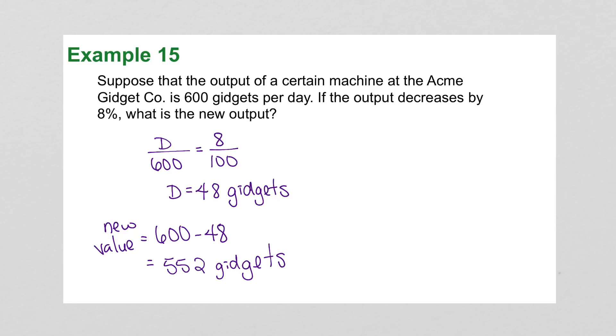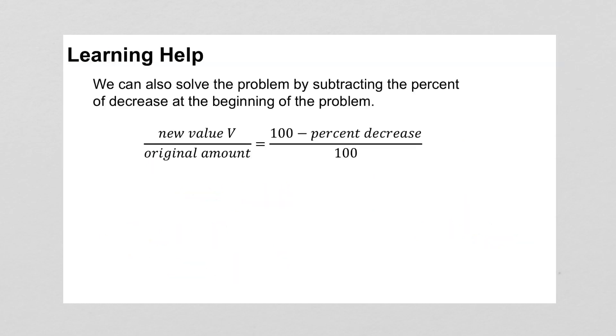You could also work this by saying D over 600 equals we're using less so you would say 100 minus 8 on top, or 92, and it would get you the same 552 Gidgets, whichever way you prefer.